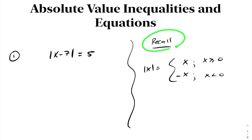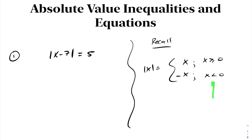Recall that the absolute value of x is defined to be: it's going to output x itself if the input is greater than or equal to 0. If that input is a negative number, then the absolute value of x is defined to be negative x.